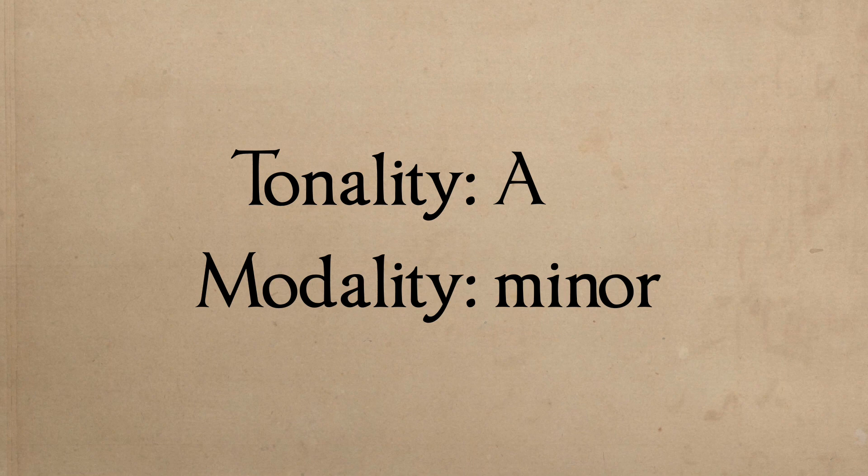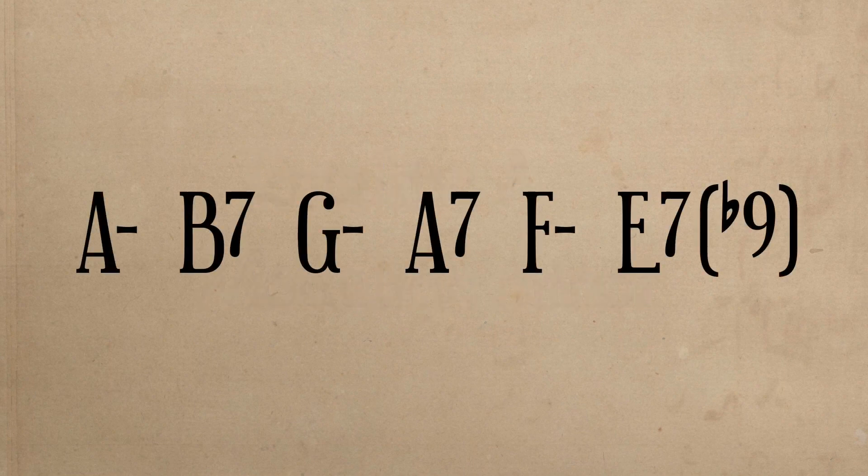The theme is set in the tonality of A, with its mode being minor. Harmonically, we have the chords A minor, B7, G minor, A7, F minor, and collectively, E7♭9. Looking at these chords, it's easy to begin feeling discombobulated, and that's understandable because this is a rather peculiar set of chords.